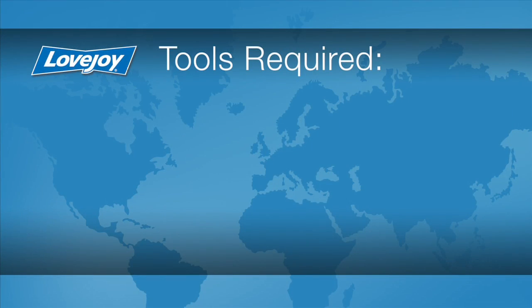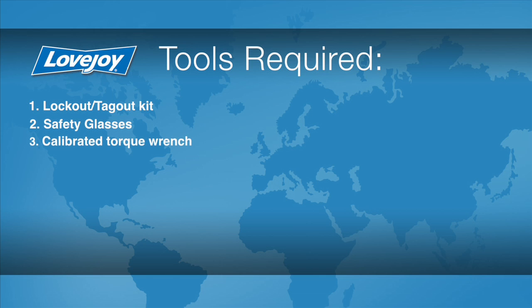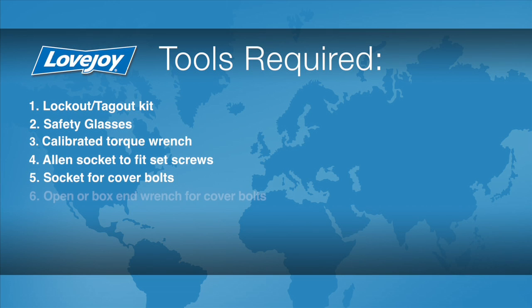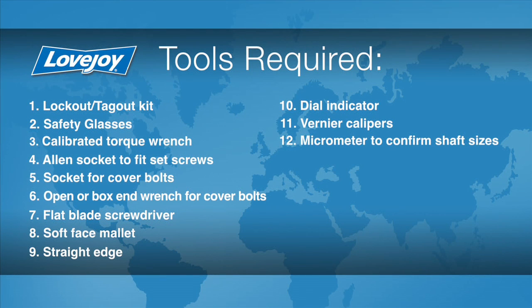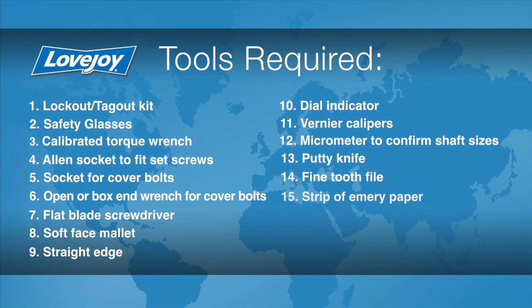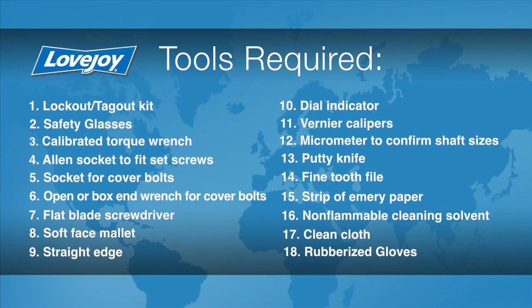Let's look at the necessary tools we will need to perform this installation. A lockout tagout kit, safety glasses, calibrated torque wrench, Allen socket to fit the set screws, socket for cover bolts, an open or box end wrench for the cover bolts, flat blade screwdriver, a soft face mallet, a straight edge, a dial indicator, vernier calipers, a micrometer to confirm the shaft sizes, a putty knife, a fine tooth file, a strip of emery paper, non-flammable cleaning solvent, a clean cloth, and rubberized gloves.